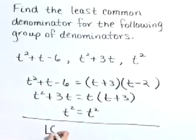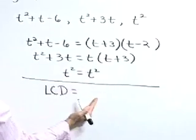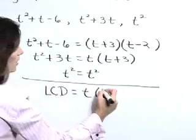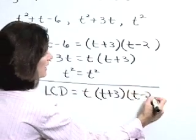Now our lowest common denominator is going to include every factor that we see here. We see a factor of t, we see a factor of t plus 3, we also see the factor of t minus 2.